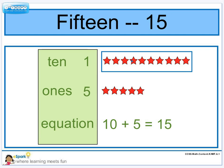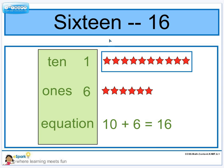15, we add one more star, and the 1s, and so now I have 10 plus 5 equals 15. 6 1s, always my same group of 10. 10 and 6, 10 plus 6 equals 16.